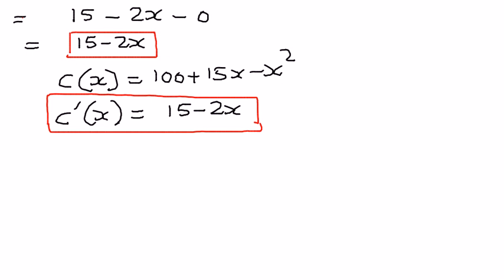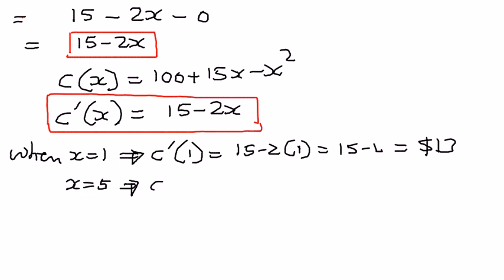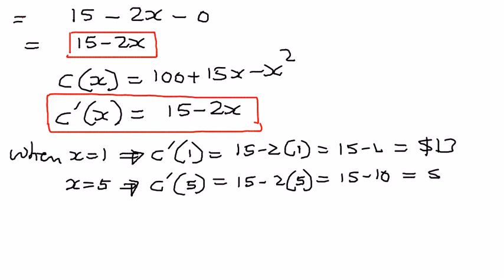When one case of jam is produced, C prime of 1 is equal to 15 minus 2 times 1, which equals 15 minus 2, which is equal to 13 dollars. When x equals 5, C prime of 5 is equal to 15 minus 2 times 5, which is 15 minus 10, which is equal to 5 dollars.